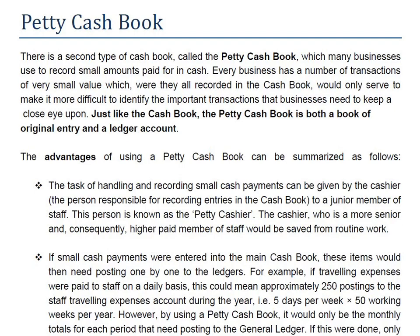A petty cashier is given a specific amount of money at the start of each month, or maybe at the end of each month, and that specific amount of money is known as the petty cash float — spelled F-L-O-A-T. The system under which this petty cash float is given to the petty cashier is known as the imprest system — spelled I-M-P-R-E-S-T.